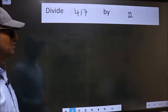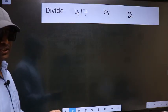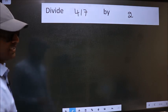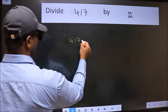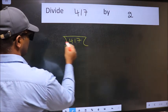Divide 417 by 2. To divide this, we should frame it in this way: 417 and 2 here.